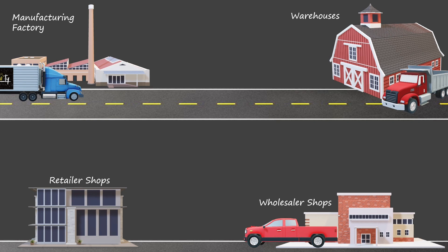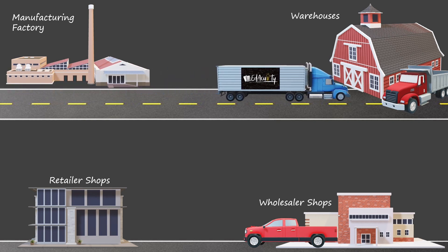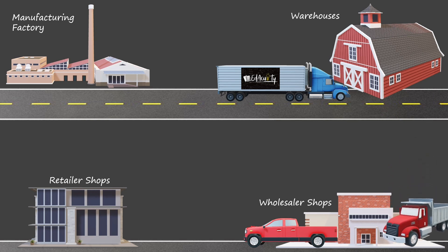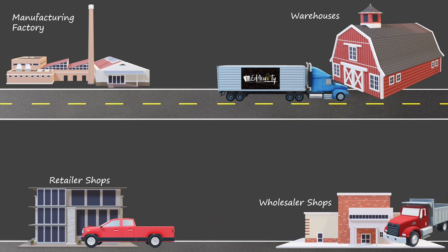Now coming back to our question: how does this work in case of a delivery system of a manufacturing company? There are five basic stages in which the goods are being delivered. Firstly, the products made in the factory are transported to the warehouses of the company, from the warehouses they are transported to the wholesalers, from the wholesalers to the retail shopkeepers, and then finally to the customers.